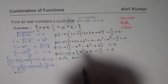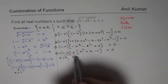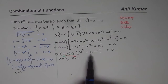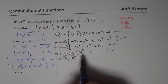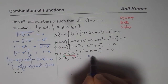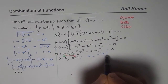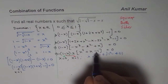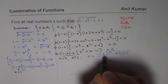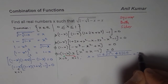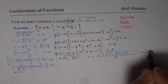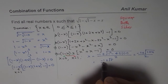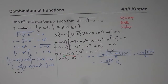The other solutions come from the factor x squared plus x minus 1 equals 0. We can use the quadratic formula: x equals minus b plus or minus square root of b squared minus 4ac, divided by 2a. Here a equals 1, b equals 1, c equals minus 1. So x equals minus 1 plus or minus square root of 1 plus 4, divided by 2, which is minus 1 plus or minus square root of 5, divided by 2.